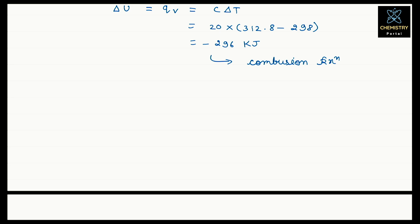So the first reaction we have is: 2Hg(g) + O₂(g) → 2HgO(s). This represents the combustion of 2 moles of mercury gas.